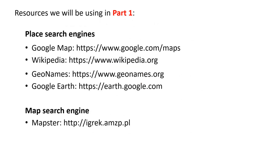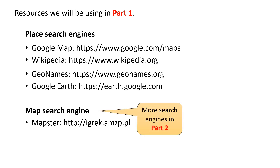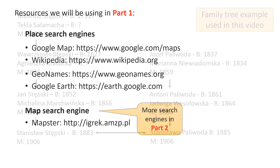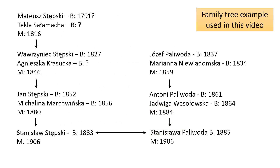In this video we will be using four place search engines and one map search engine. The second video in this set introduces additional map search engines. We will be using sections of the Stemski-Polivoda family tree to illustrate the use of the six-step process and the place and map search engines, but you will want to use your own family tree after you have viewed the video.